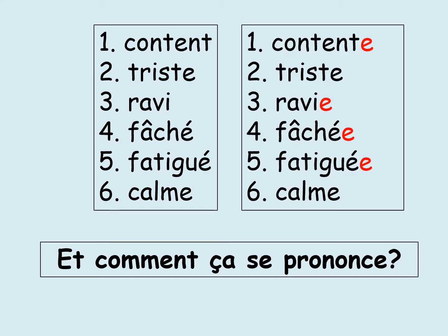Obviously we've now made these feminine. If it already has an E, we don't add one. So triste and calme don't change, but the rest of them do. However, the only one that changes with pronunciation is number one — we go from content with a silent T to contente. The rest on the right-hand side are exactly the same. So only content changes if you're a girl.